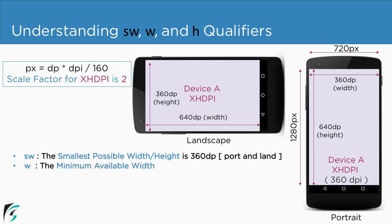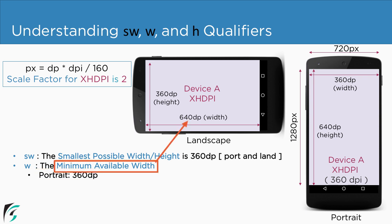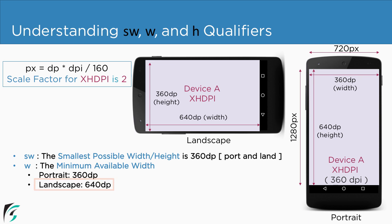What is the W qualifier? W means the minimum available width. In portrait mode, we have the minimum available width as 360 dp, so the value of W is 360 for portrait. Similarly, in landscape mode, the minimum available width is 640 dp, so that is the W value in landscape mode.